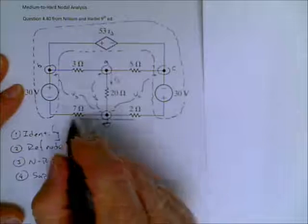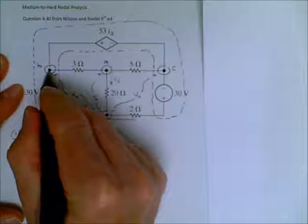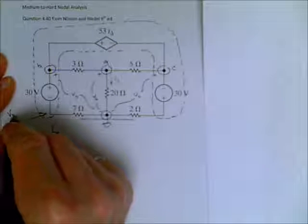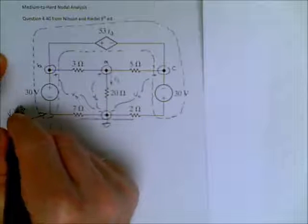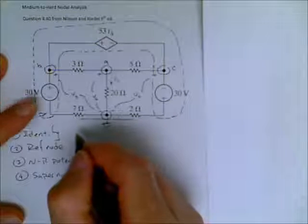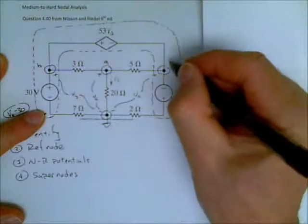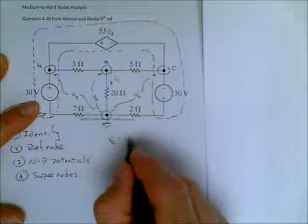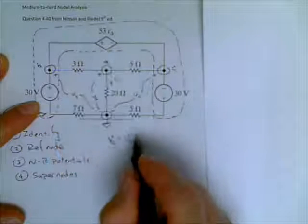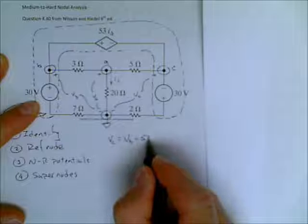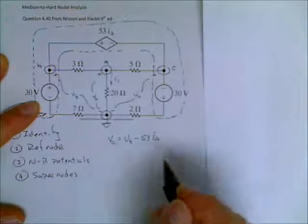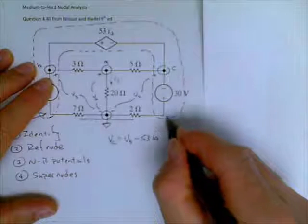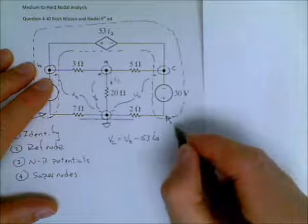Immediately, we can see that if we call this VB, then the potential down here is VB minus 30. The potential at C is equal to VB minus 53 I delta. I'm going to leave that I delta for the way it is right now. And finally, we look at the potential there.